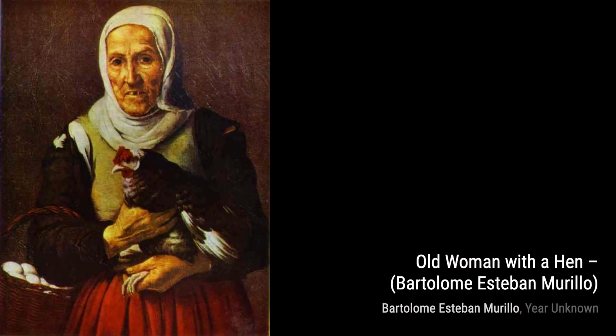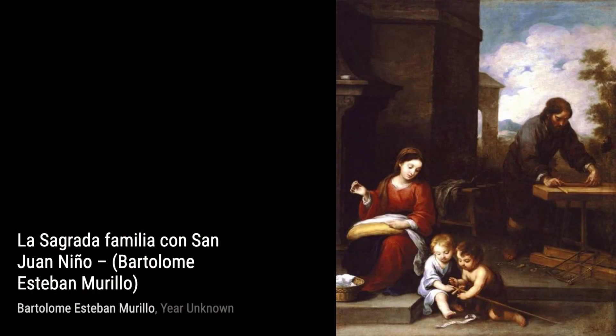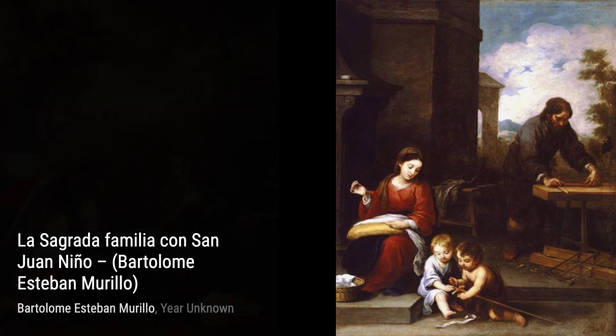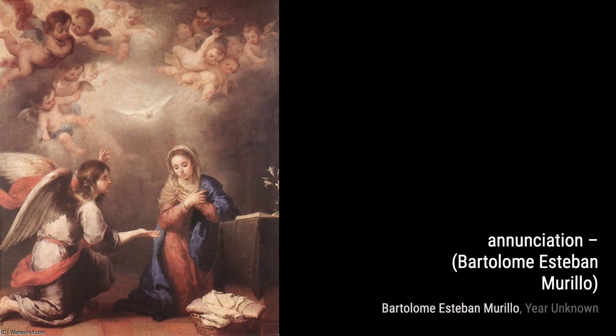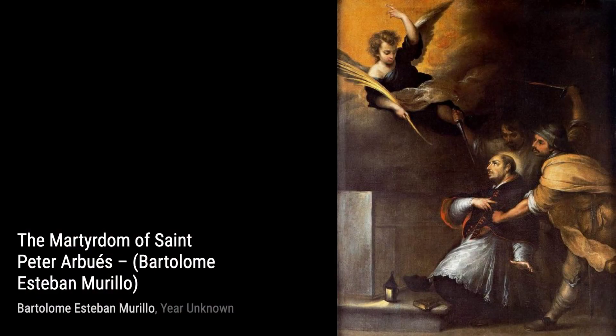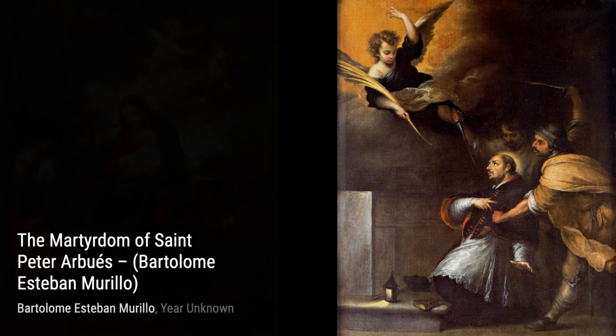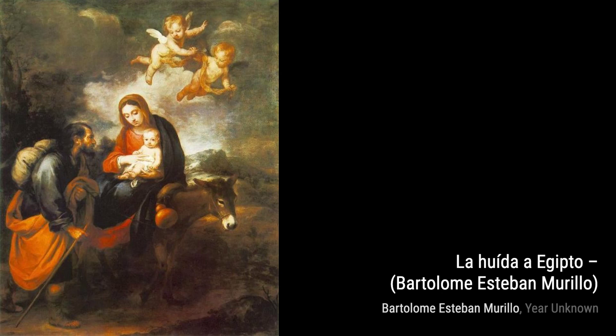Old Woman with a Hen is a charming painting that showcases Murillo's ability to capture the character of his subjects. The wrinkled face of the old woman and the hen in her arms tell a story of resilience and companionship. La Sagrada Familia Con San Juan Niño is a touching portrayal of the Holy Family. Murillo's use of light and shadow creates a sense of serenity and reverence in this religious masterpiece.